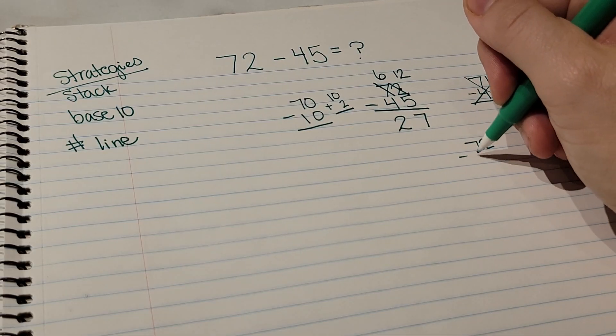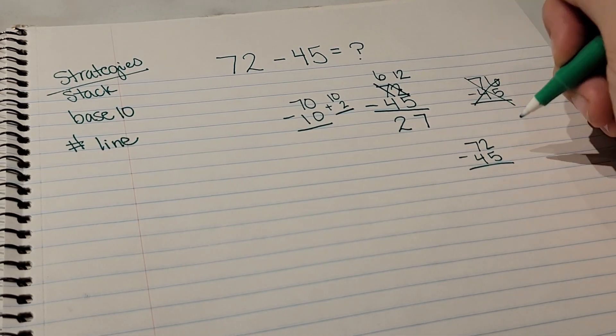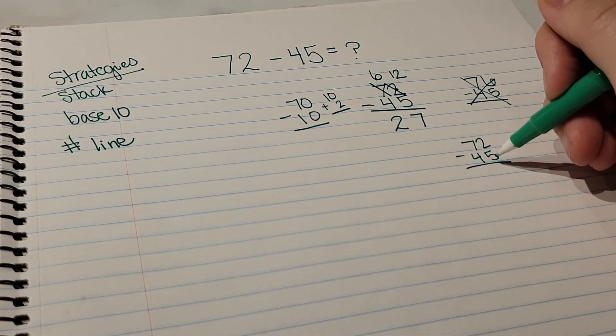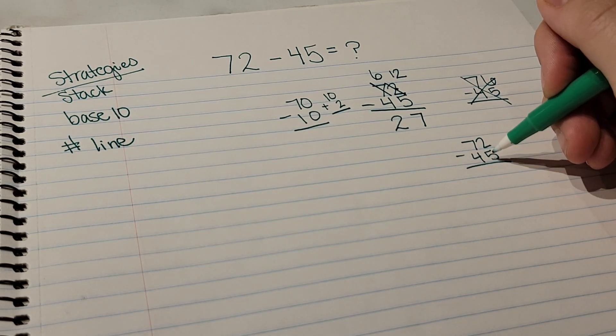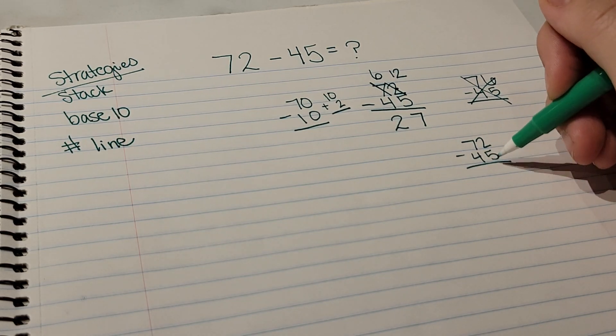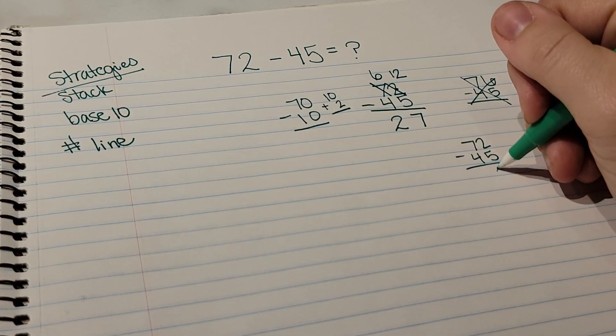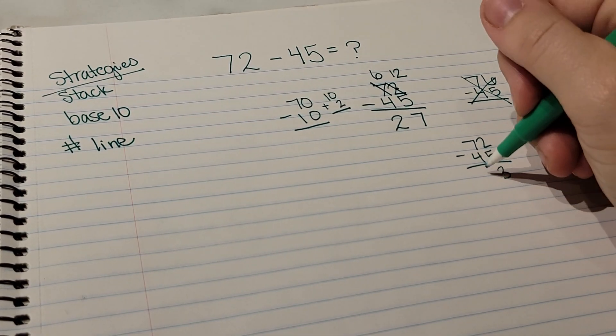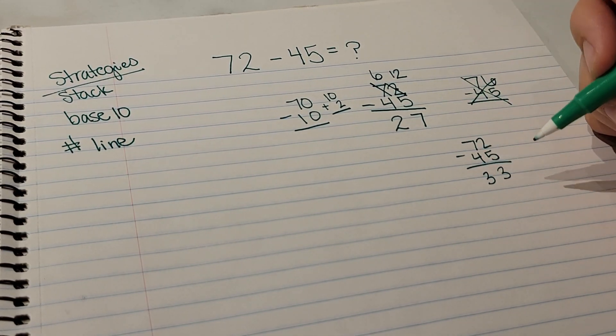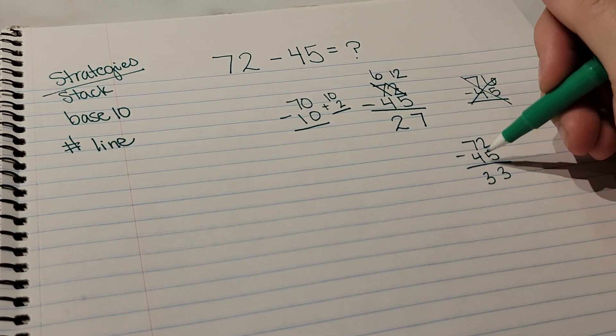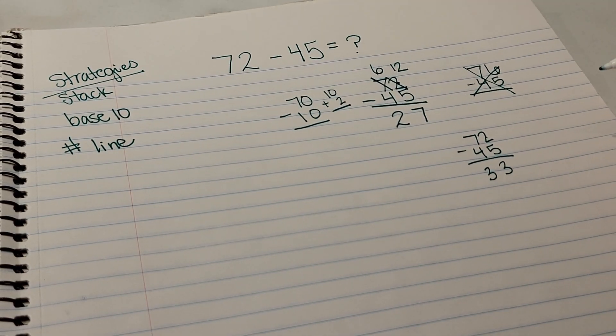A lot of them also, when they're doing 72 take away 45, they like to just look at these places and then switch the numbers in their head. So they're saying 'oh well, I can take 2 away from 5, so that would be 3, and then 7 minus 4 is 3.' But you can see that is the incorrect answer because you have to borrow from the tens place.